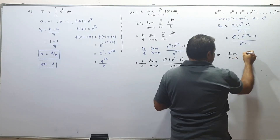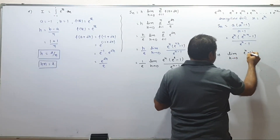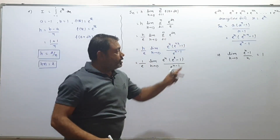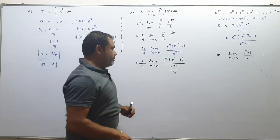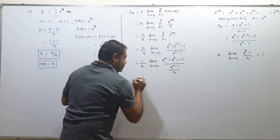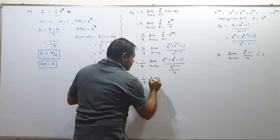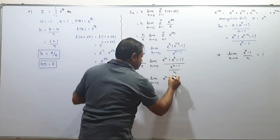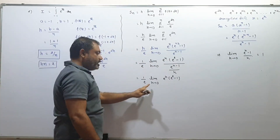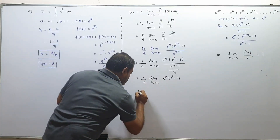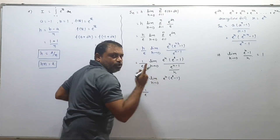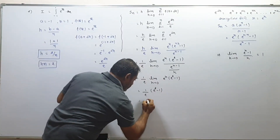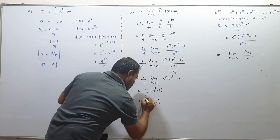As h tends to 0: e^h tends to 1, (e^h - 1)/h equals 1. So e^(nh) = e², and 1 upon e from the factor outside. Limit h tends to 0: e^h = 1, e^(nh) = e² minus 1. As h tends to 0, e^0 equals 1. So the answer is (e² - 1)/e, which equals e minus 1/e.